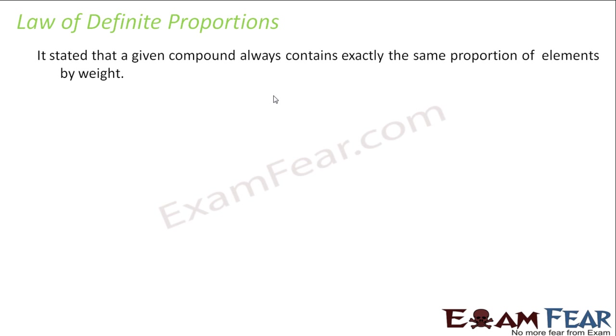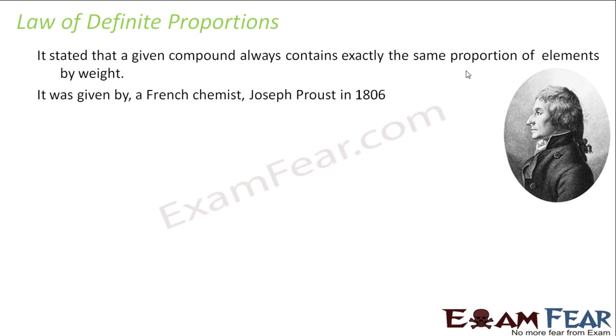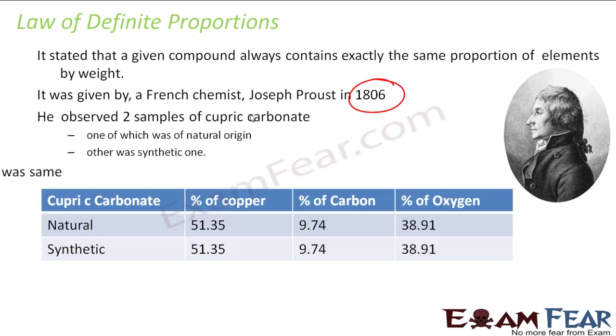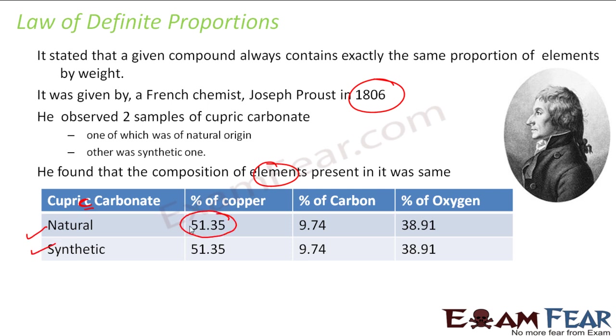Then a new law came called Law of Definite Proportion. It stated that a given compound always contains exactly same proportion of elements by weight. This law was given by this French chemist in 1806. If you see all these developments happen almost nearby. For this what he did was he took 2 samples of copper carbonate, cupric carbonate. One was natural and one which he synthesized in the lab using experiments. And then he found that the composition of elements present in the cupric carbonate is same. For both, the percentage of copper was 51.35, percentage of carbon was 9.74, and percentage of oxygen was 38.91.